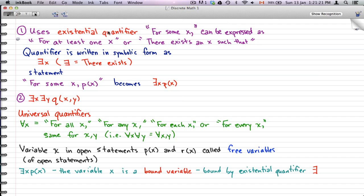...at least one x,' or 'there exists an x such that.' When you see these statements, you know right away we're talking about an existential quantifier. This quantifier is written in symbolic form as a reversed E with x. The backwards E signifies 'there exists.'